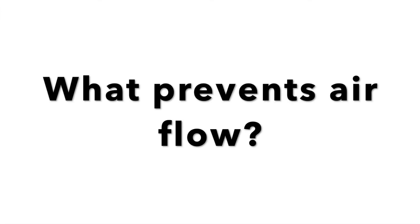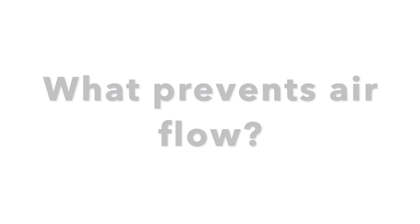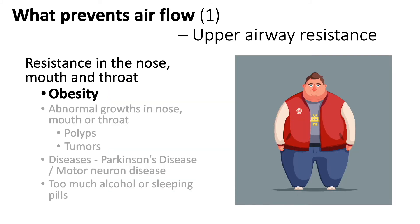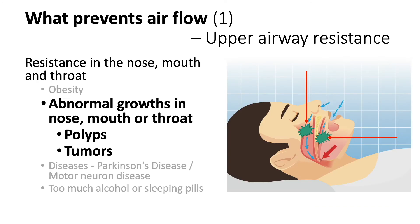What prevents air flow in and out of the body? At the level of the upper airway, air needs to go through the nose or mouth and through the throat. When one is very fat, there is extra tissue in the tongue and in the throat, and this may increase the resistance. There may be extra growths in the nose, mouth, and throat.